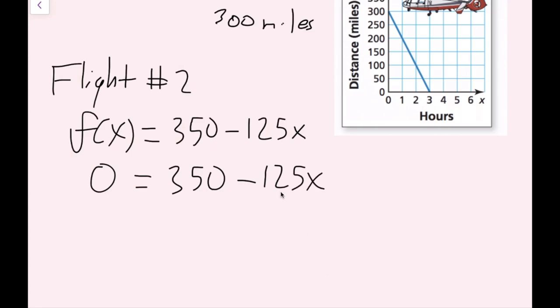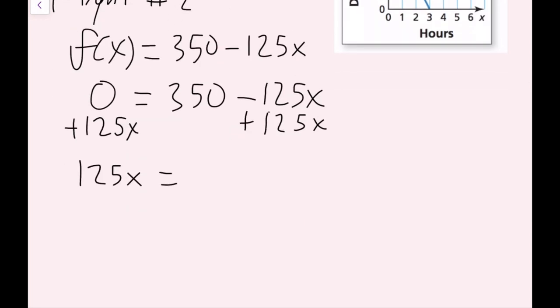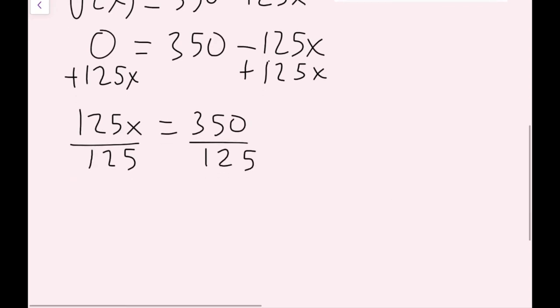And now you can either add 125x on both sides or subtract 350 on both sides. To avoid a negative, I'm going to add 125x on both sides. And I get 125x equals 350. The last step would be to divide by 125 on both sides. So now I get 350 over 125. But I know I can divide a 25 out. And the reason I know that is because this ends in a 25 and this ends in a 50. So if I divide a 25 out, on the bottom, I get a 5. And on the top of this fraction, I get 14. So now I see my x equals 14 over 5.